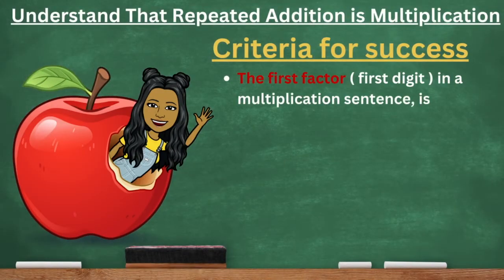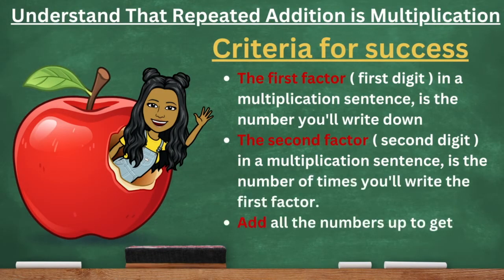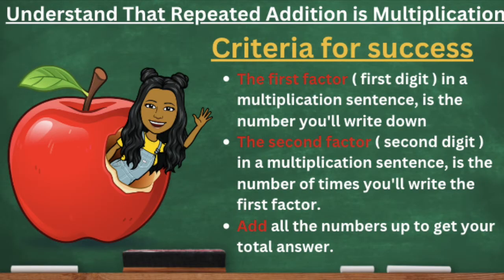In today's class, you guys will understand that repeated addition is multiplication. Let's take a look at our criteria for success. The first factor in a multiplication sentence is the number you'll write down. The second factor in a multiplication sentence is the number of times you'll write the first factor down. Then add up all the numbers to get your total answer.